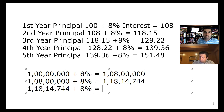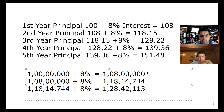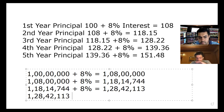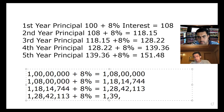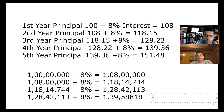Third year: 1 crore 28 lakhs. Fourth year: 1 crore 39 lakhs 58,818. What we're looking at here is all value — compounded growth in value.